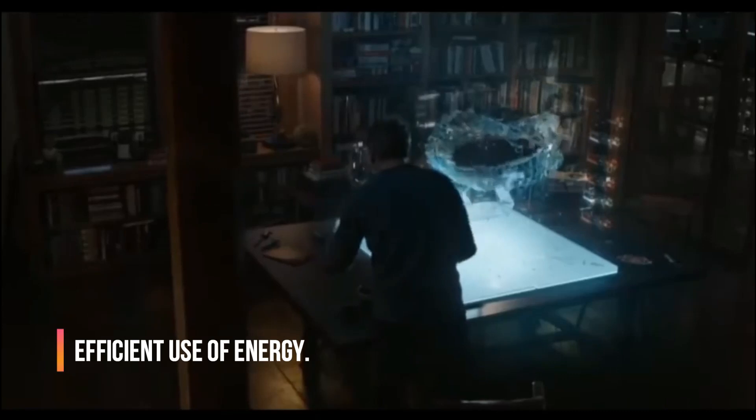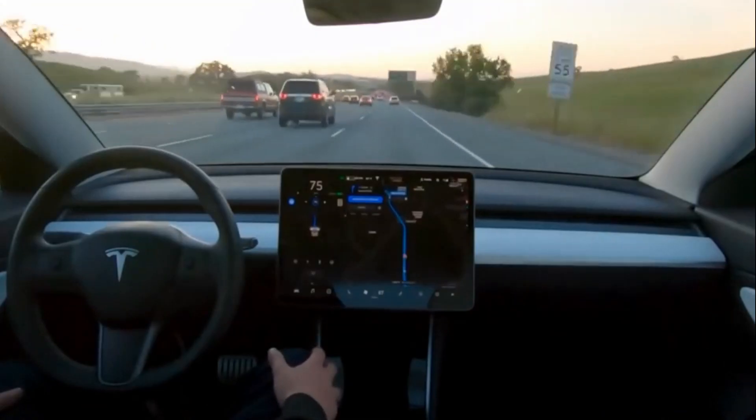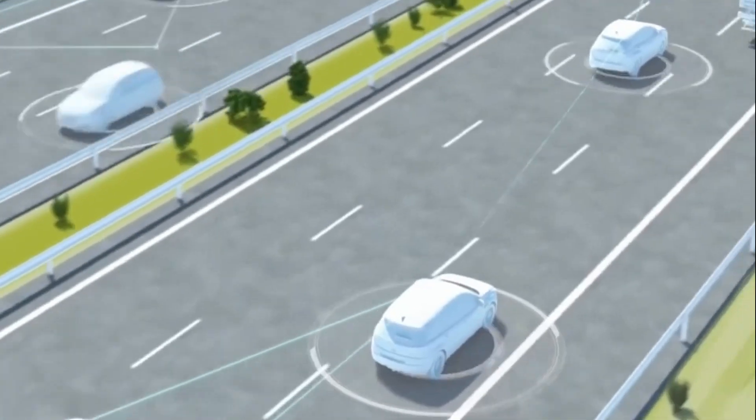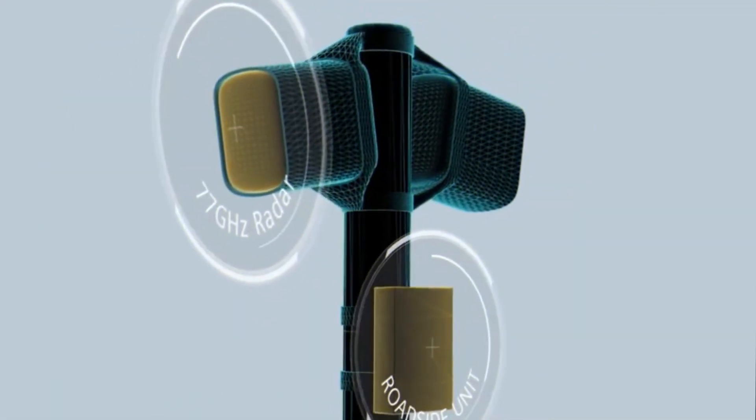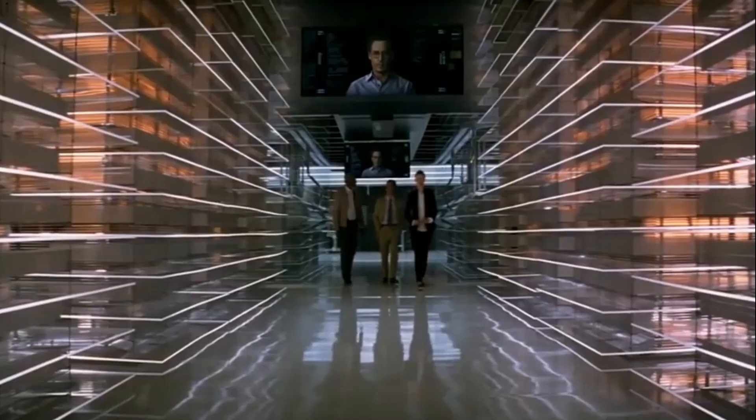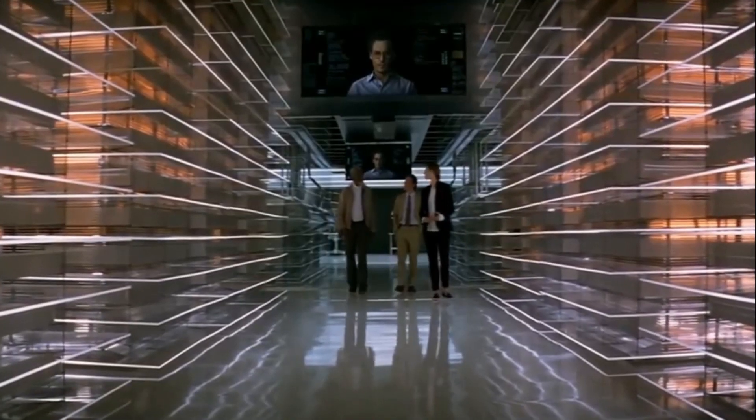Efficient use of energy. Building management systems that are powered by AI monitor and regulate the amount of energy used in commercial and residential structures. This brings about a reduction in energy usage, which in turn brings about cheaper utility costs and adds to attempts to lessen environmental impact.